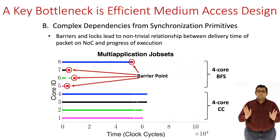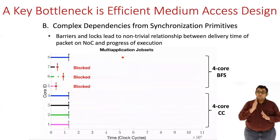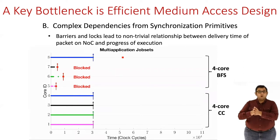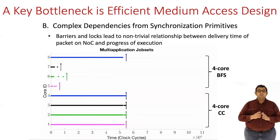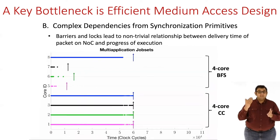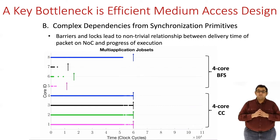Let me show you what would happen if we deployed TDMA, that is time division multiplexing, for this traffic. Once cores 5, 6, and 7 hit their barriers, they are blocked and have to wait ideally until core 8 also reaches the barrier point. But since TDMA divides the channel equally between cores, core 8 is significantly delayed since it has to share the channel with cores 1, 2, 3, and 4. And this is the issue with traditional MAC protocols.